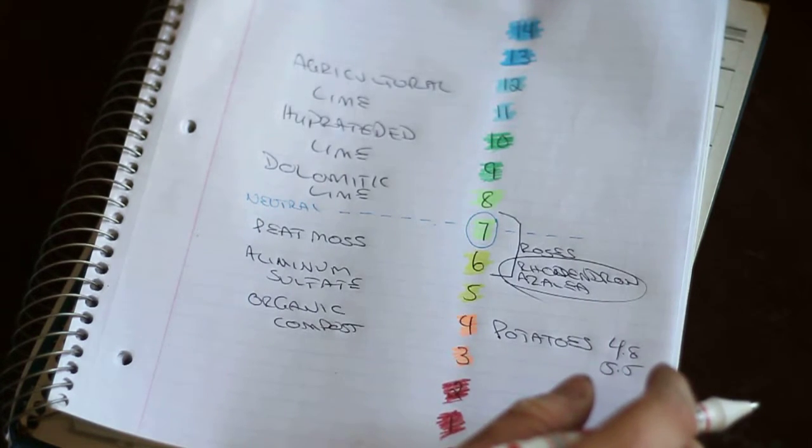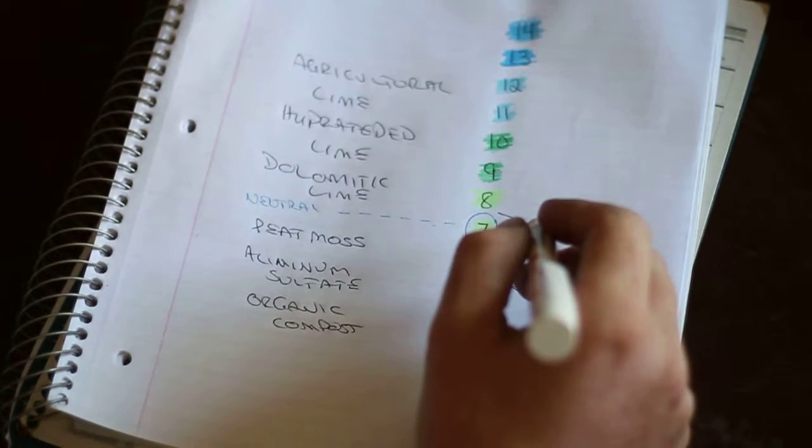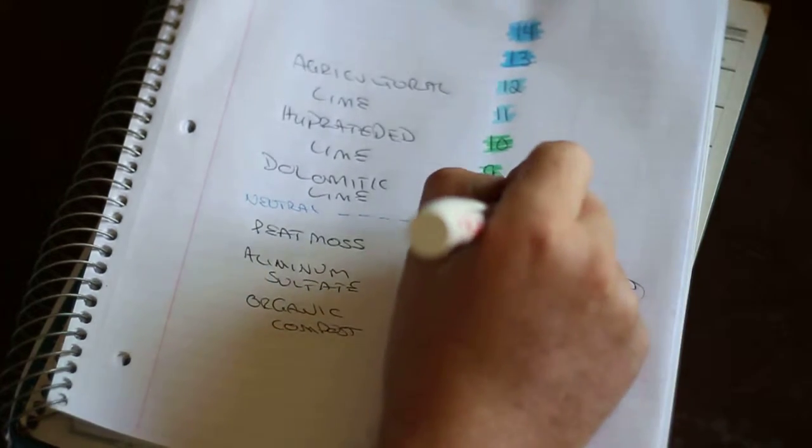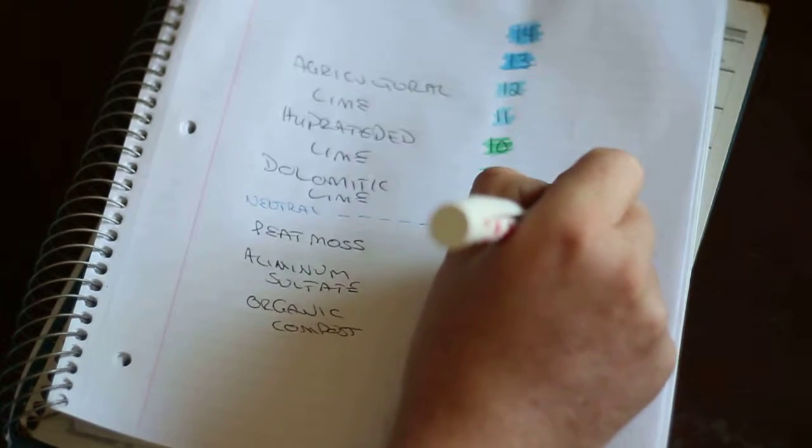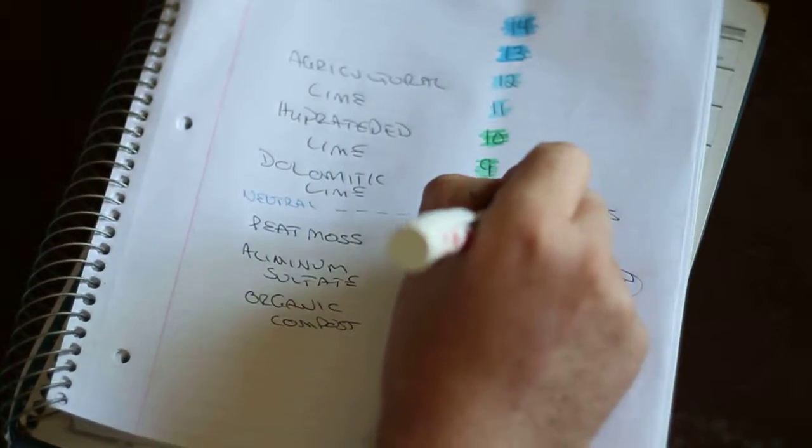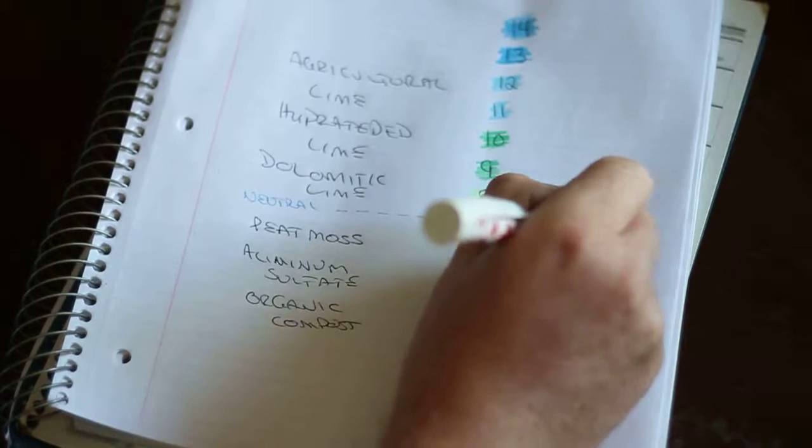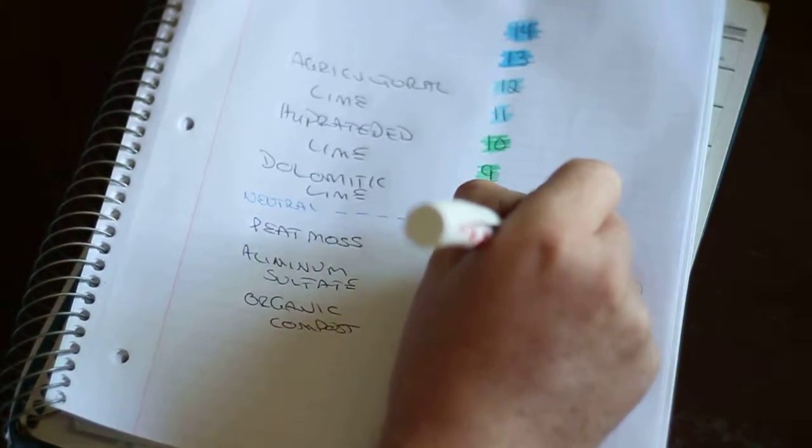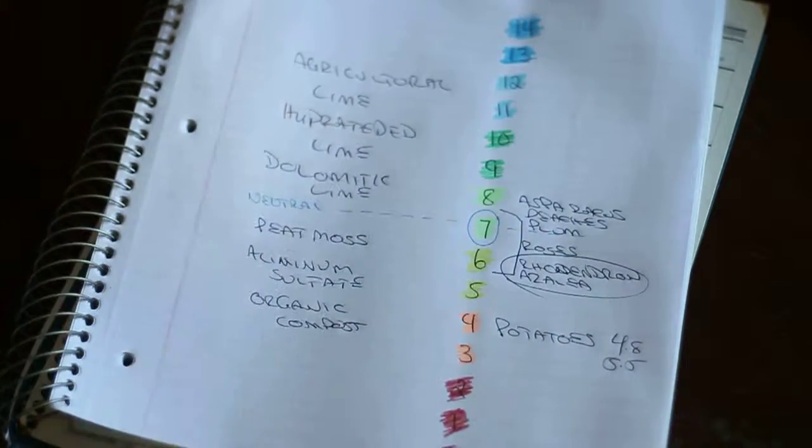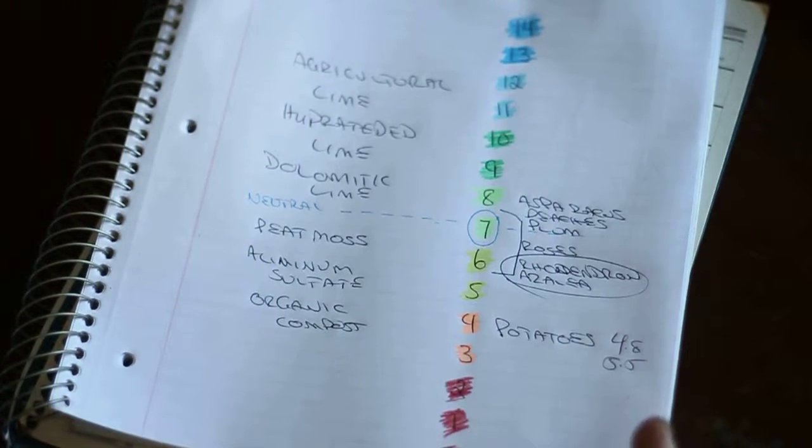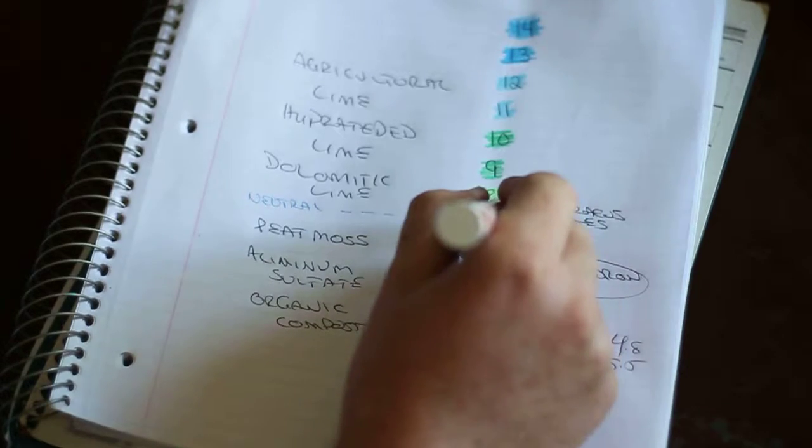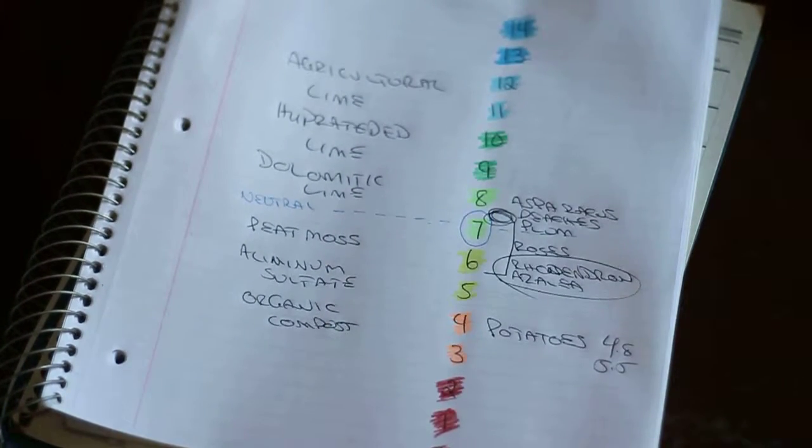If you wanted something slightly more neutral to alkaline, asparagus is going to be up around the 7 to 8 range. Peaches, plums, they also love a slightly more neutral to alkaline. They're around that 6 to 7 range. Brussels sprouts, beans, broccoli, they're all going to be sort of in this range here, about the 7 to 7.5 mark.